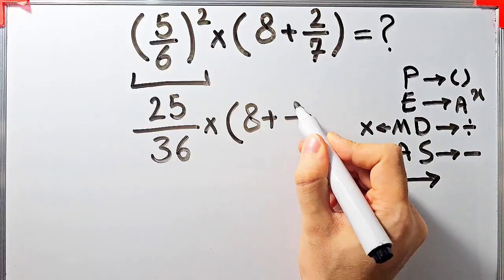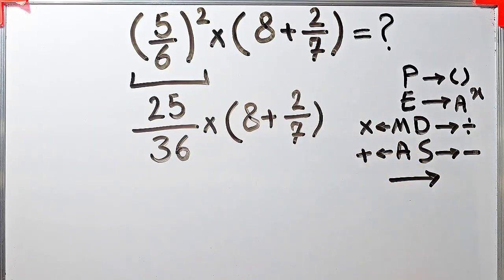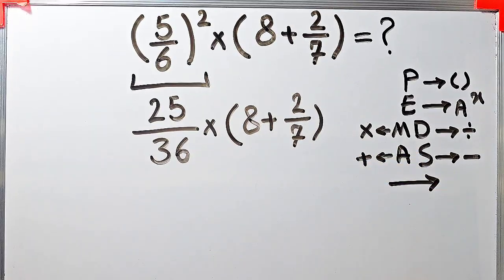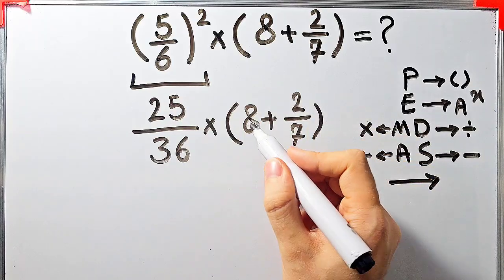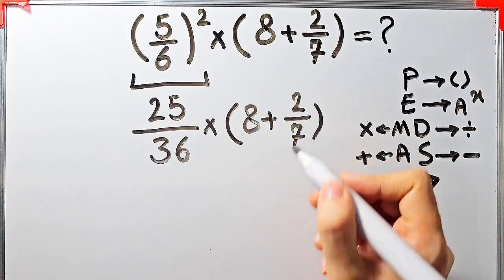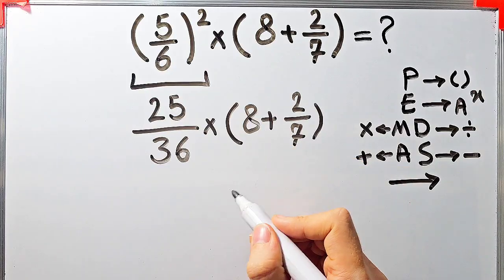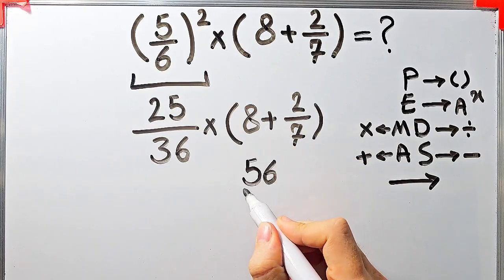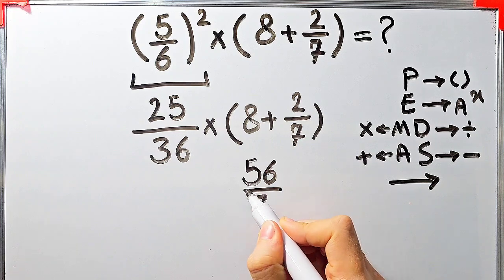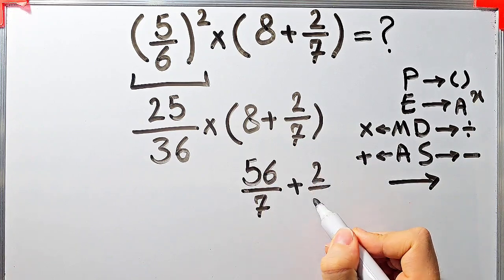Now we have multiplication and parentheses again, so we simplify the parentheses. We have eight plus two over seven. Since the denominator of this fraction is seven, we can write eight as 56 over seven. Now we have 56 over 7 plus 2 over 7 inside these parentheses.